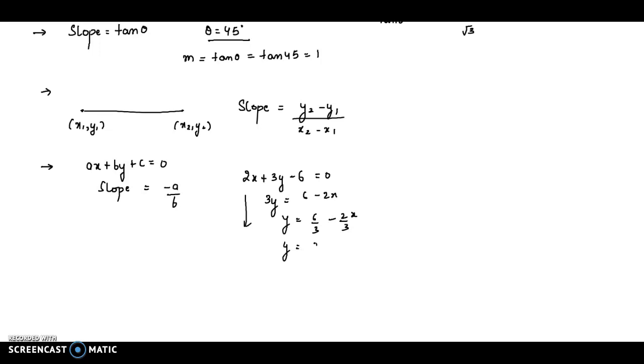So here, M will be -2/3. -a/b is -2/3. So slope is -2/3.